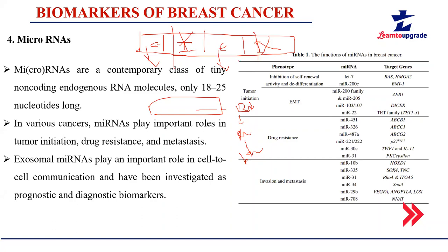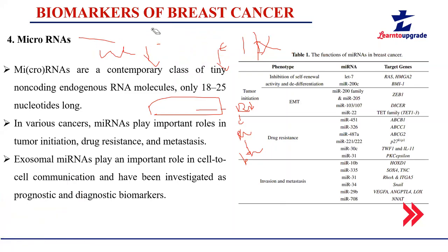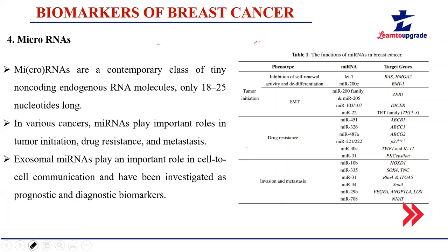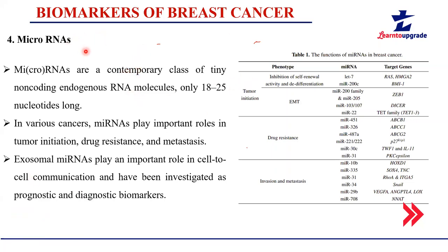These micro RNAs, transcribed from the intron (junk DNA) part of the cell, are small RNA molecules. Once a micro RNA is formed, it participates in regulating transcription of other genes. For example, the micro RNA transcribed from intron DNA has a complementary sequence to mRNA molecules synthesized by cancerous cells. This complementarity allows the micro RNA to bind to the cancerous cell's mRNA.